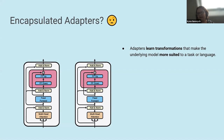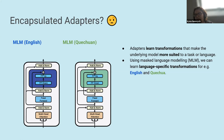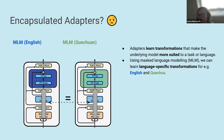What do we mean by encapsulation? What we are trying to do is learn a transformation of the underlying model which is more suited to our new task. For example, if we do language modeling, we fine-tune the adapter for English and for the Quechua language. Because the input representations for both adapters come from the same frozen transformer model, and the adapter must adjust the representation so that the subsequent frozen layer will accept it, we assume that the adapters are roughly interchangeable — they are stitched in between the frozen layers.